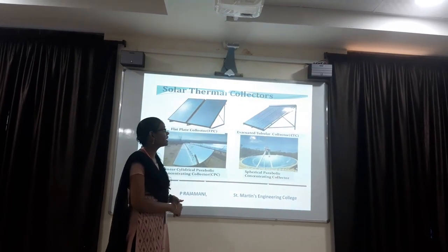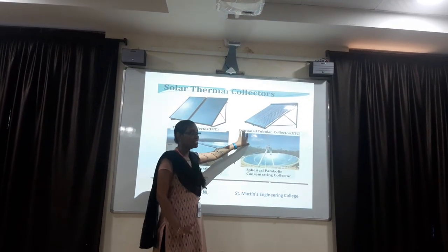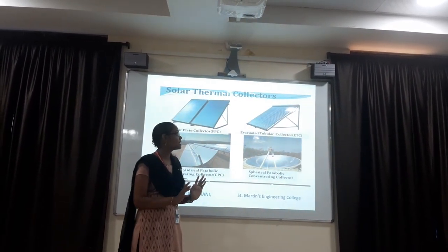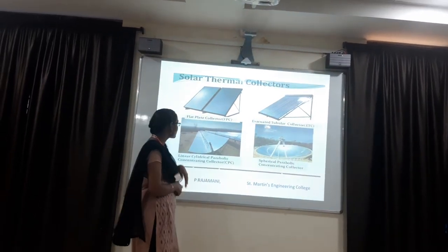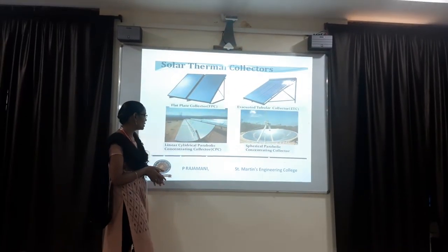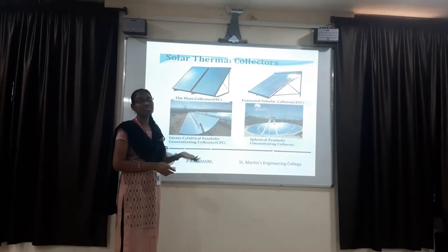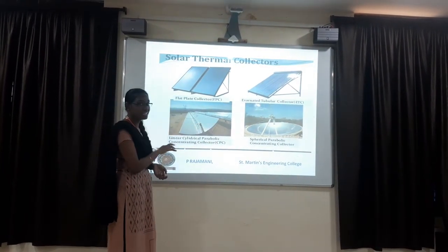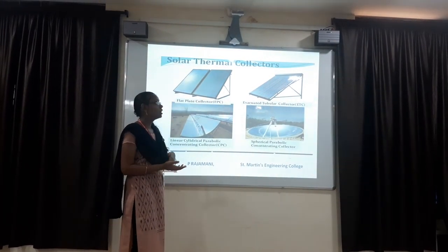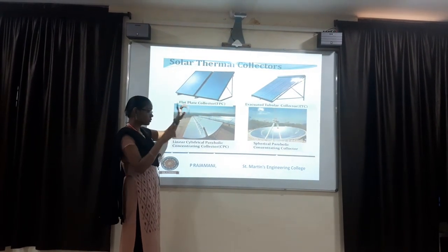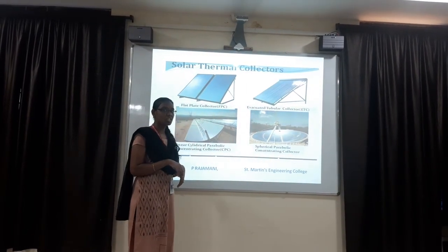In the evacuated tubular collector, only one solar panel is used. The total solar panel is divided into different modes. For the cylindrical parabolic concentrating collector, we also use solar panels but the shape is different. The type of collector used depends upon the area and the nature of the location. That is why we use different types of solar panels.